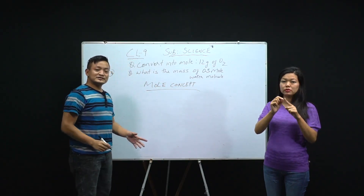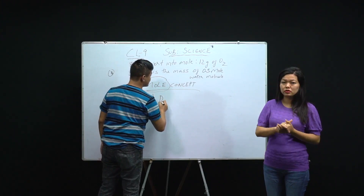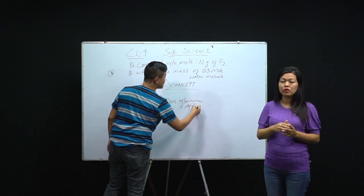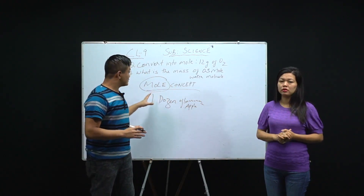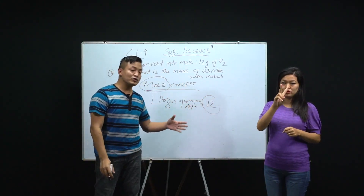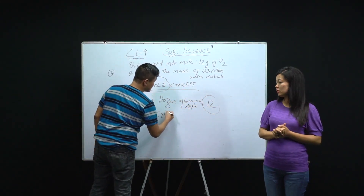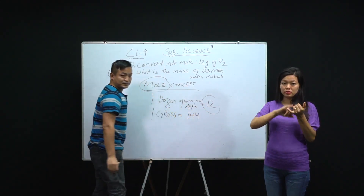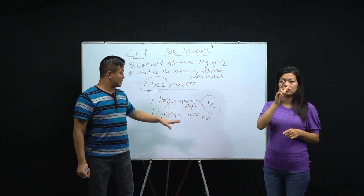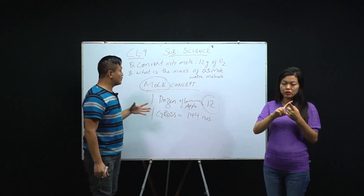Many students get confused with the mole. But before I discuss it, consider this: if I say one dozen of bananas or apples, the number 12 comes to your mind right away. You know that in one dozen there are 12. Or one gross — one gross means 144. So in a dozen you know there are 12, and in a gross you know there are 144. One mole is also just like one dozen or one gross.